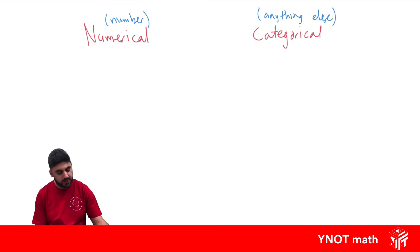We can have two types of numbers though. We can have discrete numerical data, or we could have continuous numerical data. Now what's the difference between those two?